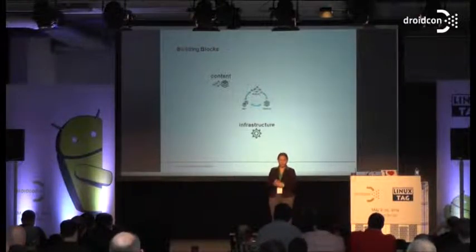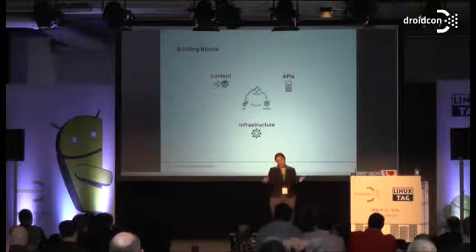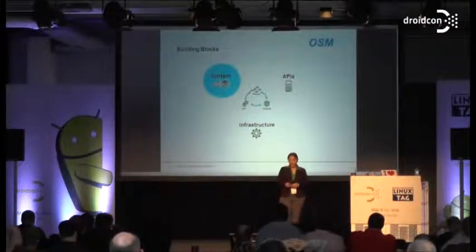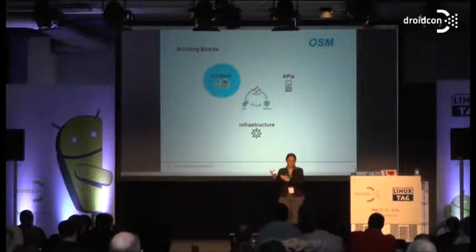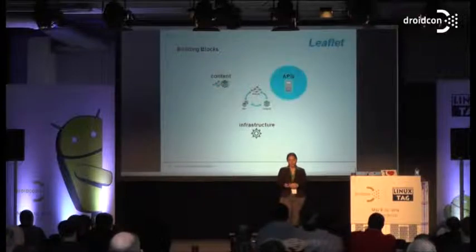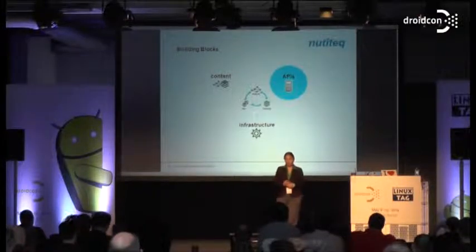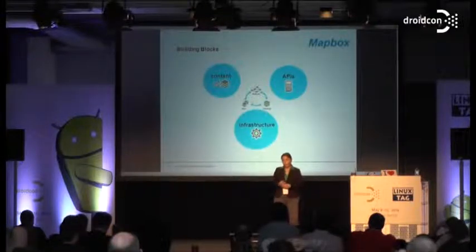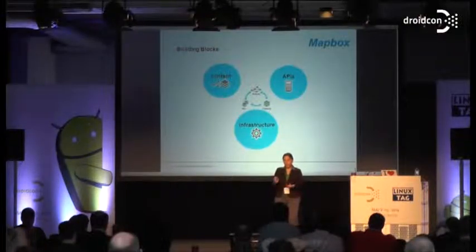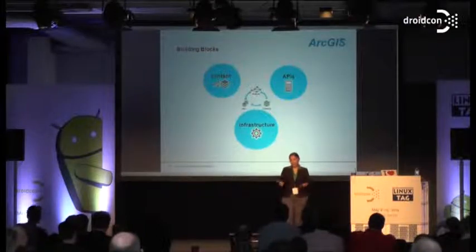We can use leading APIs, SDKs, or clients to build these applications. OpenStreetMap is an example for content, but it only has content — it doesn't have APIs or infrastructure. Leaflet is an example of an API, but it doesn't have the content. MapBox, for example, had a presentation yesterday — it's an API tool. A full platform like esri's ArcGIS comprises all three: content, API, and infrastructure.